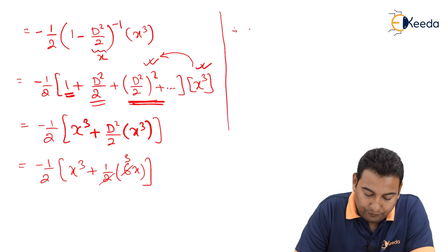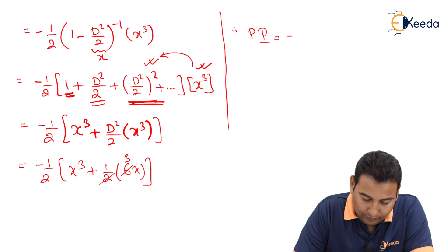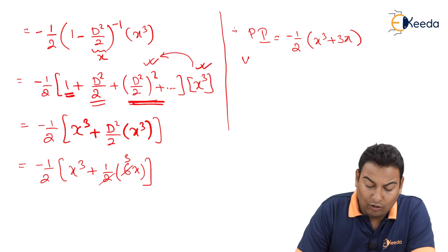Therefore your PI is minus 1 upon 2 of x³ plus 3x. And what is the solution friends?